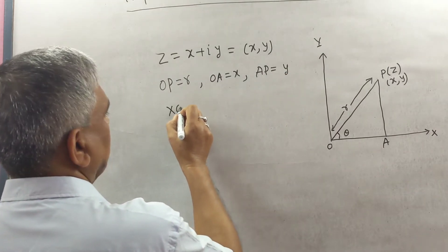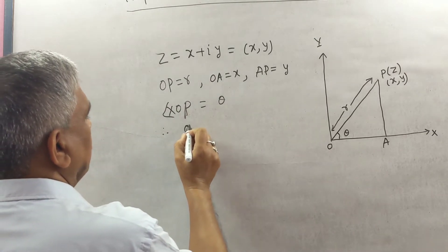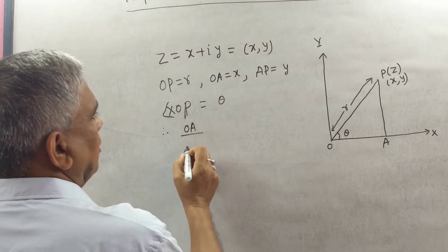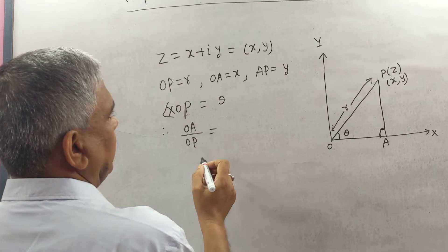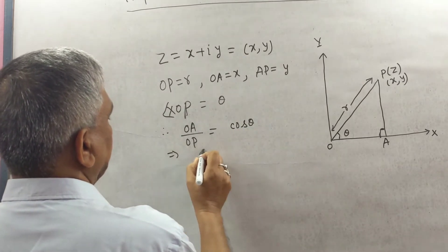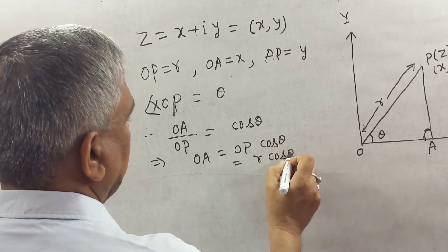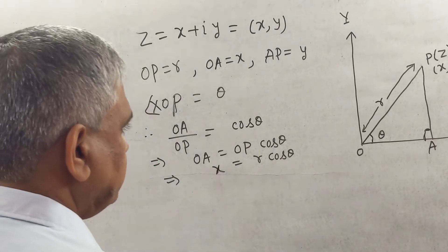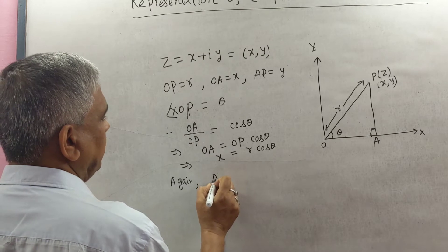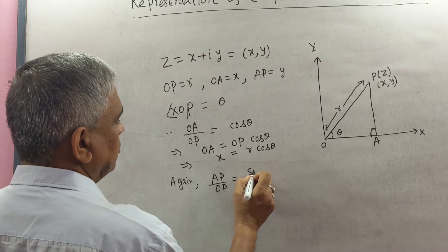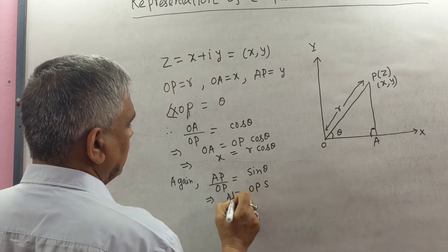The angle XOP equals θ. Therefore OA/OP = cos θ, which implies OA = OP·cos θ = r·cos θ. Here OA = x. Similarly, AP/OP = sin θ, which implies AP = OP·sin θ, so y = r·sin θ.